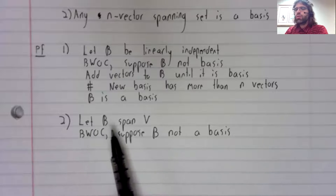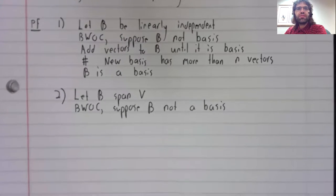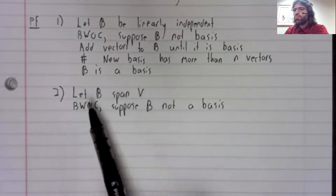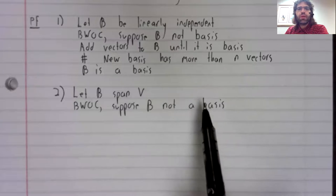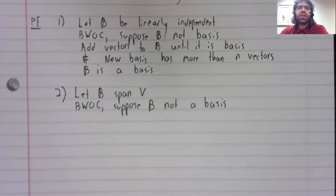We're going to suppose that the spanning set is not a basis and produce a contradiction. B spans V. So if it's not a basis, that can only mean B is linearly dependent.